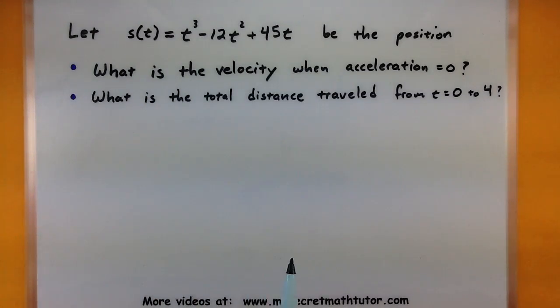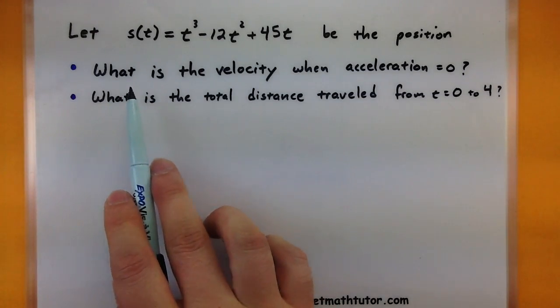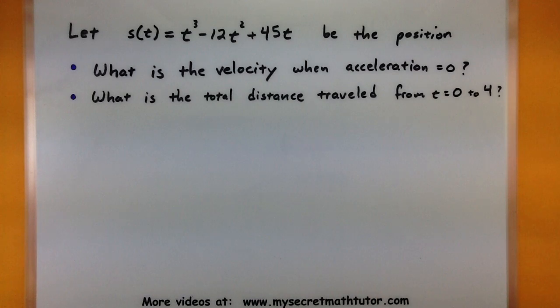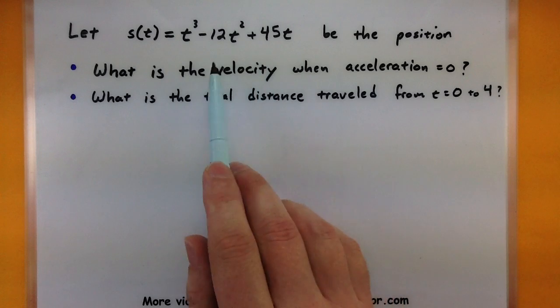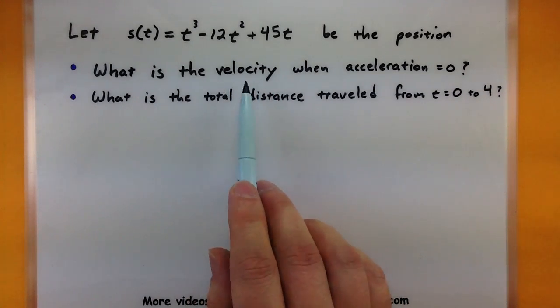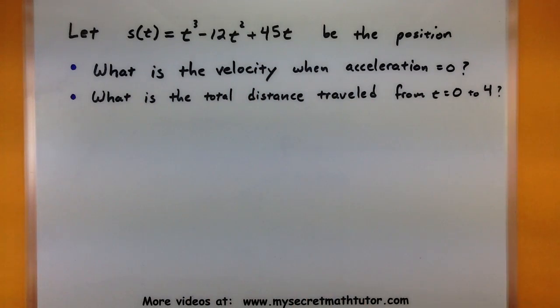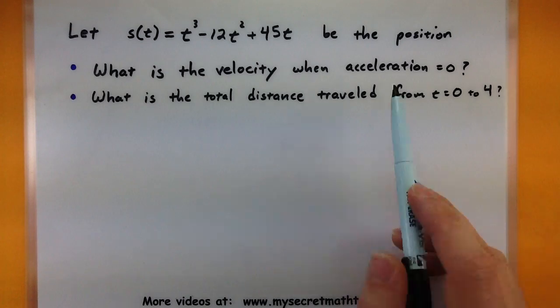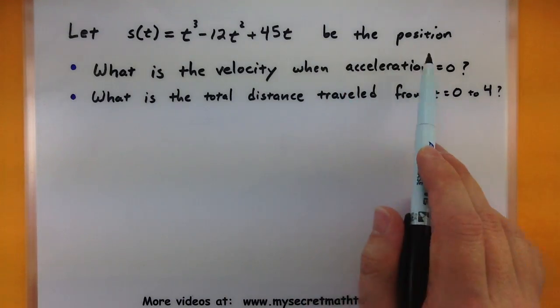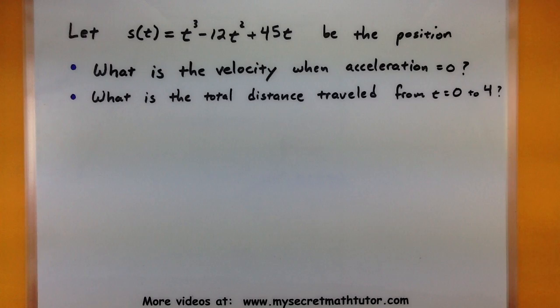So this is my same position function. And now I want to know what is the velocity when the acceleration is equal to zero. So I'm seeing these two key terms in here. I have the first derivative and the second derivative of position. We can borrow both of those. But I just really want to focus on the second derivative. When is the acceleration equal to zero?